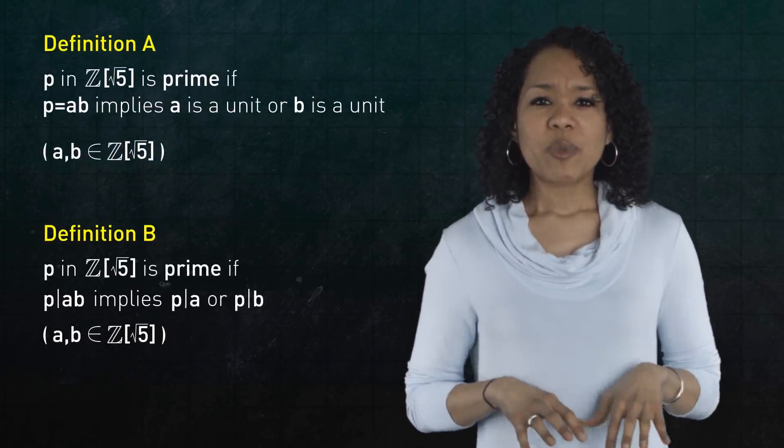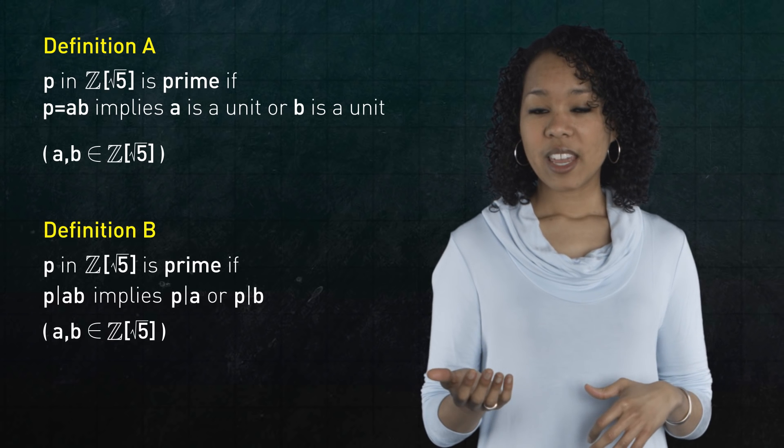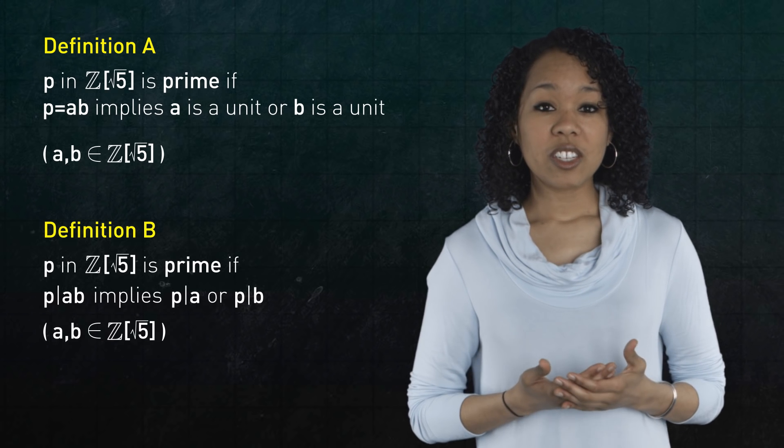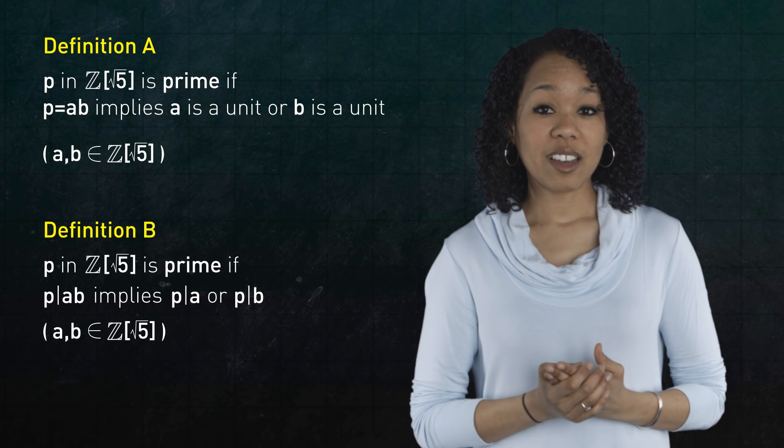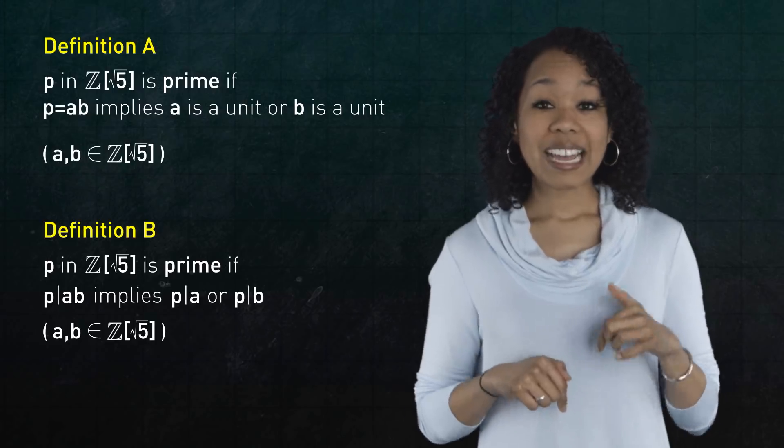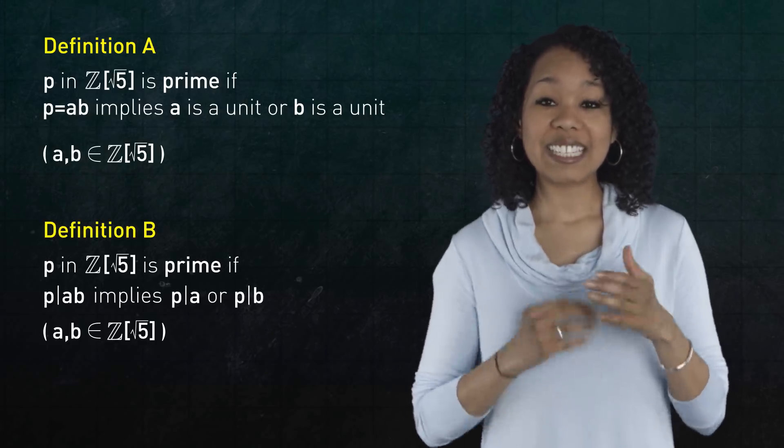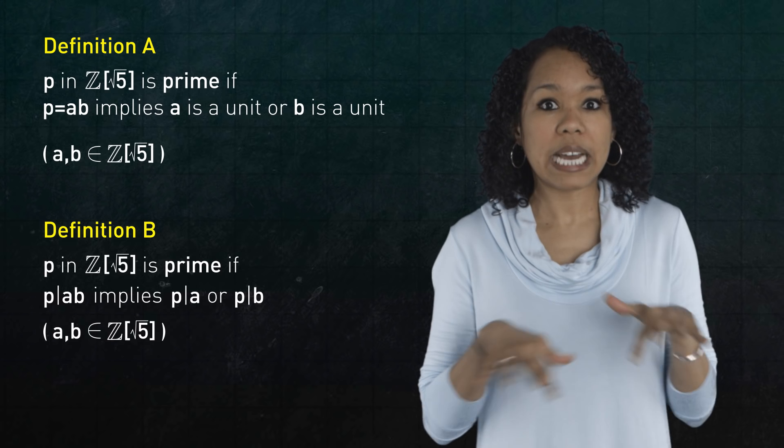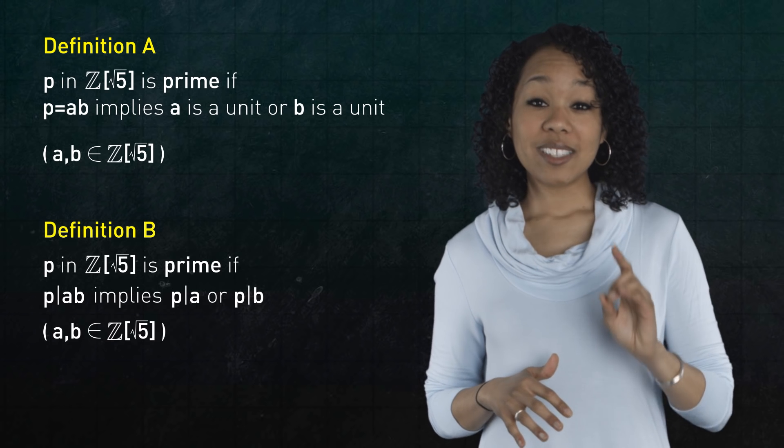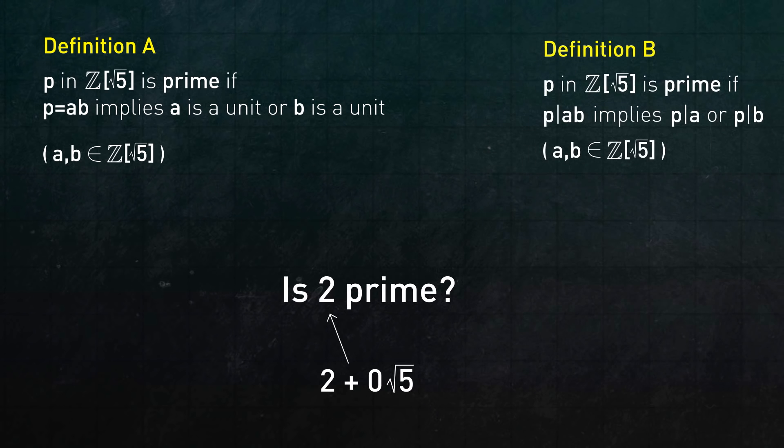And that's why unit is a good generalization of the number one. Okay, so we have two definitions, a and b. If we work with the integers, then these two definitions coincide. But now I claim that because we are working in Z adjoined root 5, they do not coincide. In particular, the number 2 is prime by definition a, but not prime by definition b.